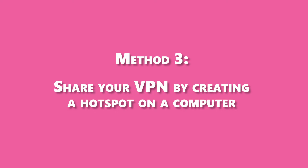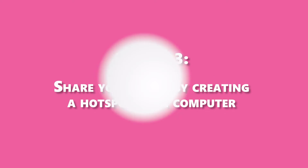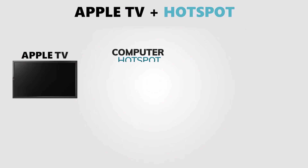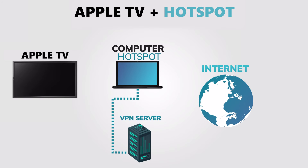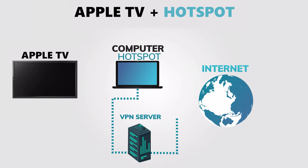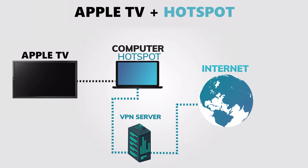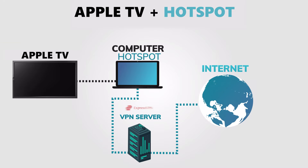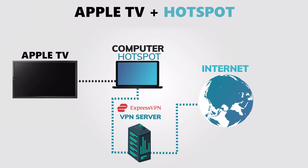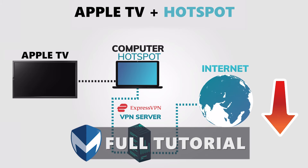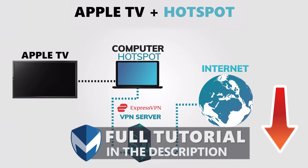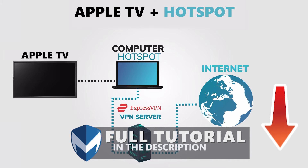Method 3: Share your VPN by creating a hotspot on a computer where you already have a VPN installed and connected. This is a far easier method, but you need a computer with Windows, Wi-Fi, and a VPN already installed and connected. I will be using ExpressVPN in this tutorial. If you want to learn more about ExpressVPN, you can check out our full review. Here are the quick steps to set up a VPN hotspot.